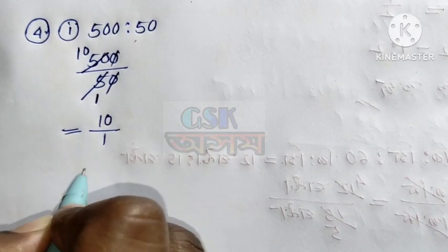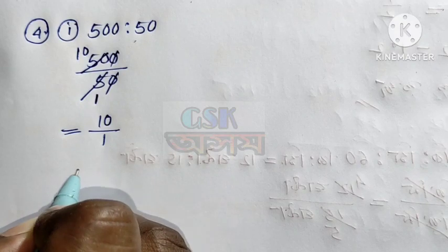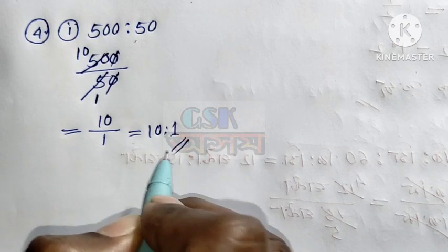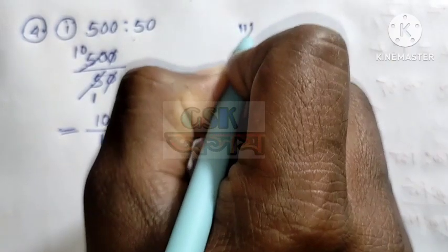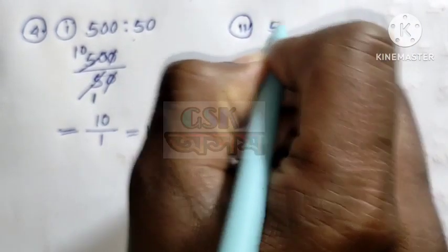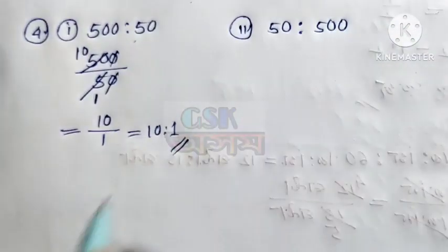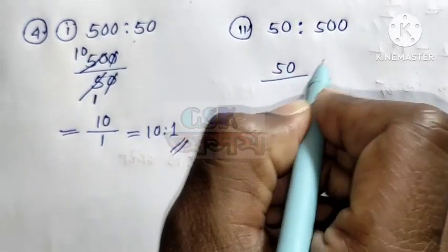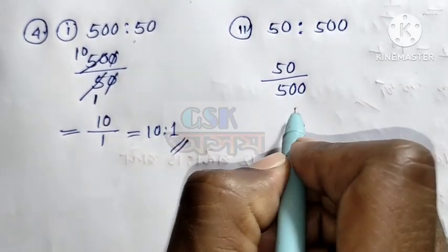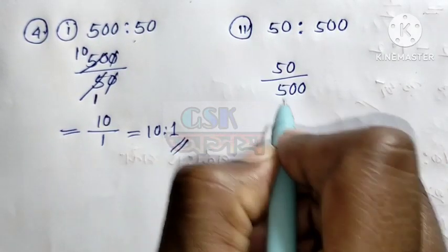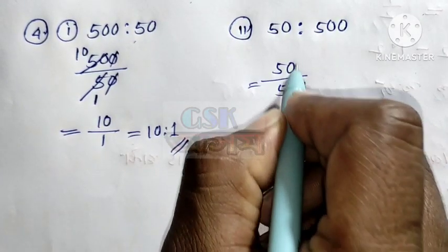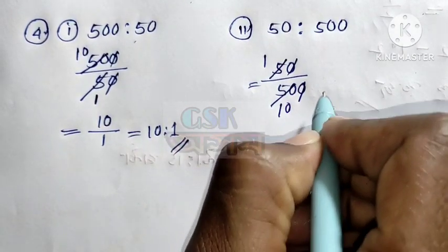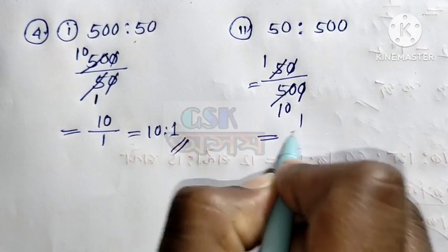10 by 1. 10 is to 1. 50 is to 500. 50 is to 500. 50 is to 100. 5. 1 by 10.